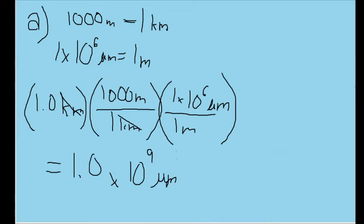That's a one with nine zeros after it or one billion. I've made it a little pretty by writing it out in scientific notation. And that's how many microns are going to be in one kilometer.